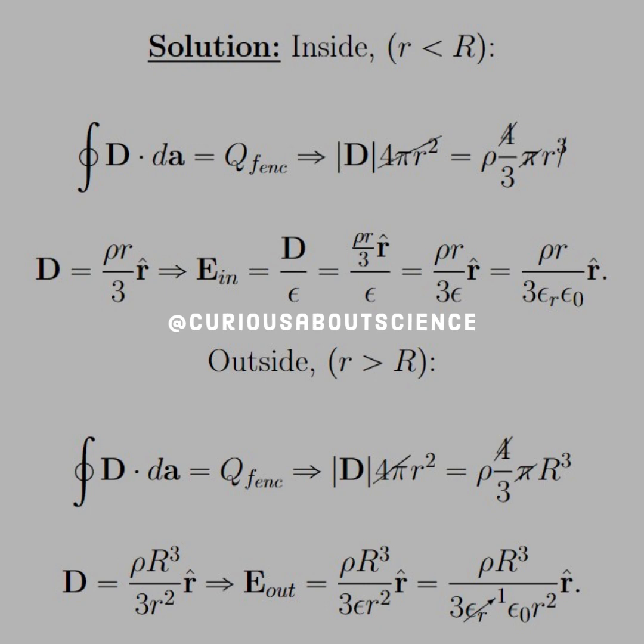So our simplification for D to E is a little bit more. But since we're outside of the sphere in question, we know that the dielectric constant is 1 because we're in air.